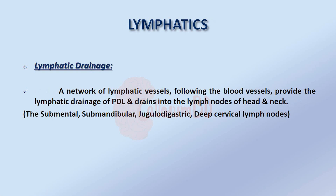A network of lymphatic vessels following the blood vessels provides the lymphatic drainage of the periodontal ligament, draining into the lymph nodes of the head and neck region. These include the submental lymph node, submandibular lymph node, jugulodigastric lymph node, and deep cervical lymph nodes.